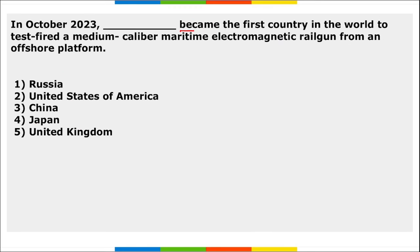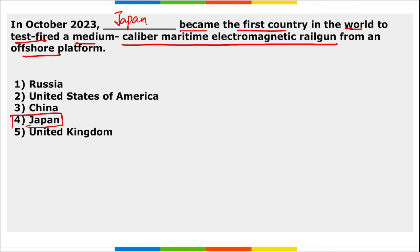Next: Japan became the first country in the world to test-fire a medium-caliber maritime electromagnetic railgun from an offshore platform. It is a medium-sized electromagnetic railgun — mark this important fact.